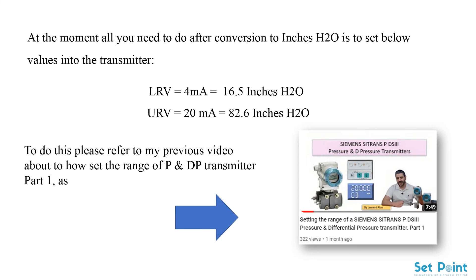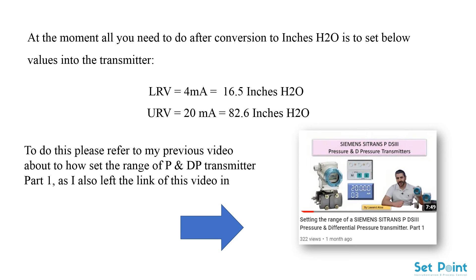To set these values into the DP transmitter, please refer to my previous video about how to set the range of P and DP transmitters, part one. I've also left the link to that video in the description box below.